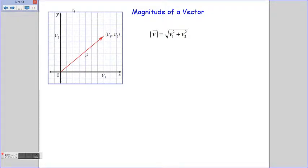Let's talk about the magnitude of a vector. Any vector can be translated so that its tail is at the origin (0, 0) and its head points to some point. Here, vector v points to the point (v1, v2). We can find the magnitude of the vector using the distance formula between two points. Since we start at the origin, the magnitude of vector v simplifies to that equation.